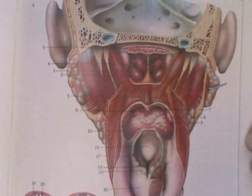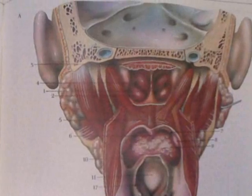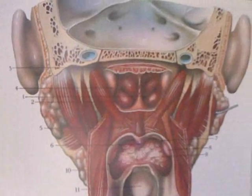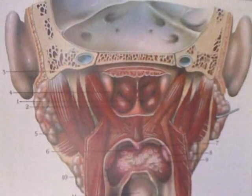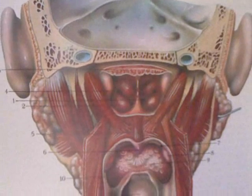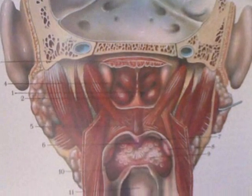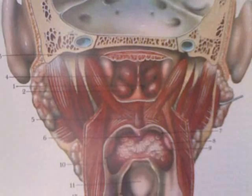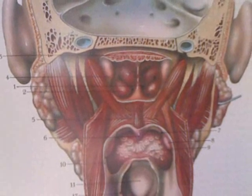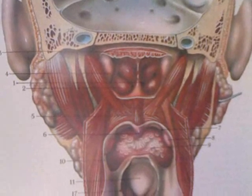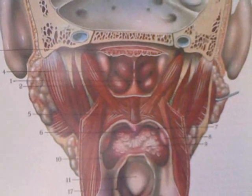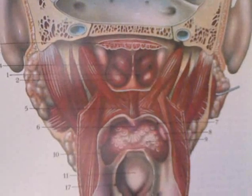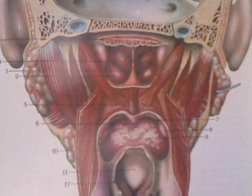So I'll come in nice and close again, and we'll go from top to bottom. We can get a close view of all the different structures there. Those are the parotid glands that they have manipulated there with an instrument.